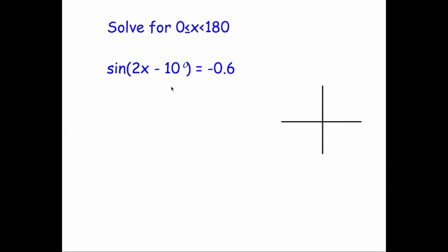In this question we've been asked to solve sine(2x - 10) equals negative 0.6. To do this, the first thing we're going to need to do is to look at the values for x.